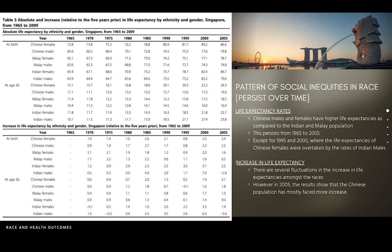However, in 1995 and 2000, the life expectancies of Chinese females were overtaken by the rates of Indian males. As for the increase in life expectancies, there are several fluctuations. In 2005, the results showed that the Chinese population mostly had more increase in life expectancy in comparison to other racial groups.